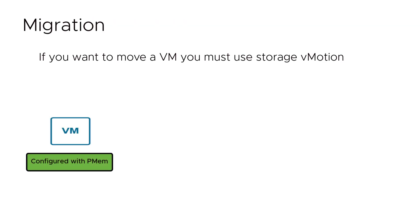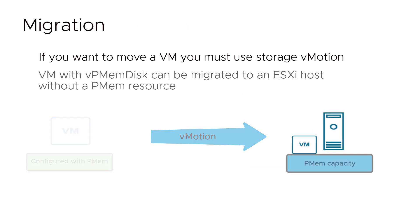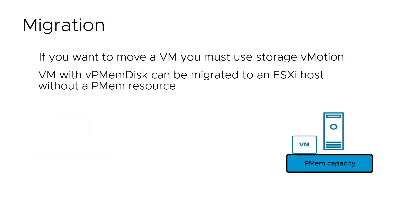Since PMEM is a local data store, if you want to move a VM, you must use Storage vMotion. Keep in mind that a VM with PMEM can only be migrated to an ESXi host with an existing PMEM resource. On the other hand, a VM with vpmem disk can be migrated to an ESXi host even if there is no PMEM resource.